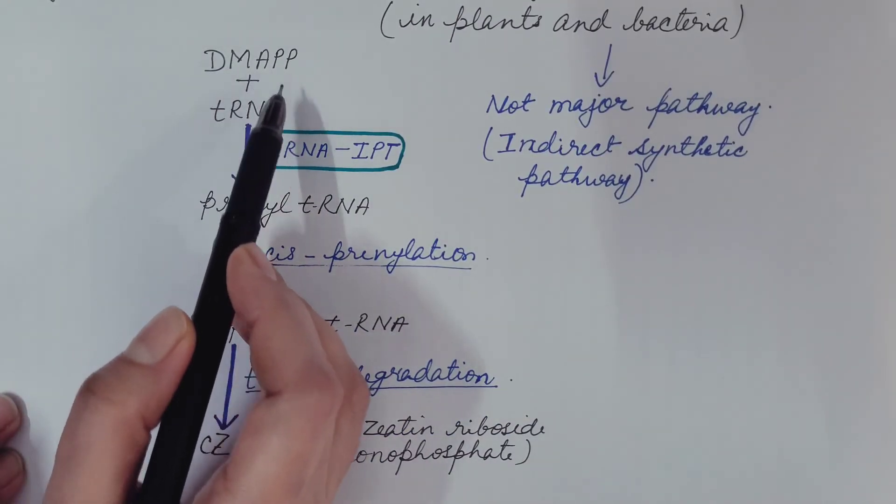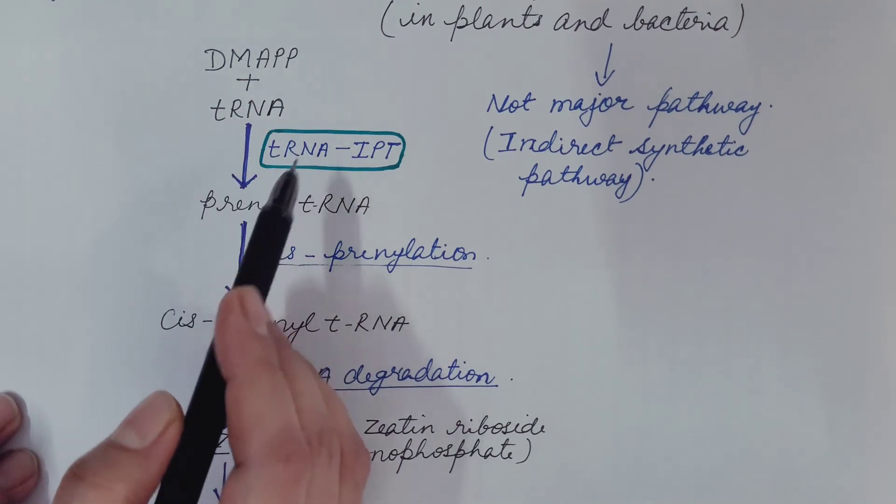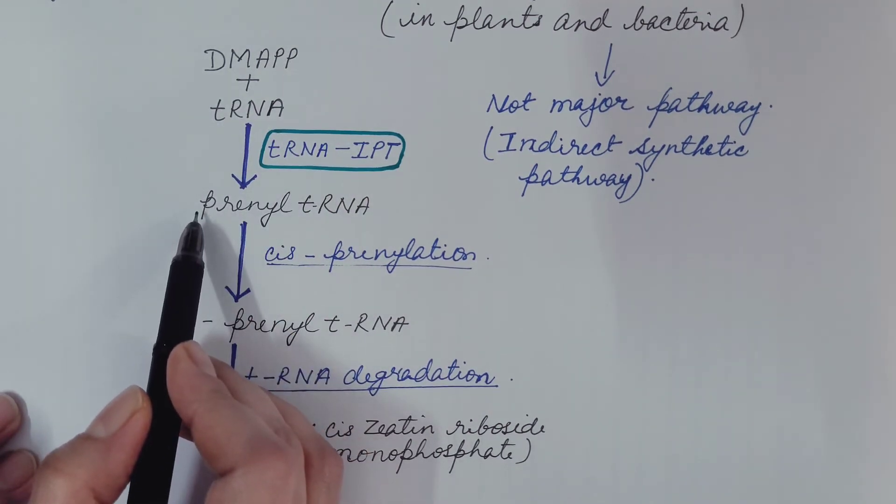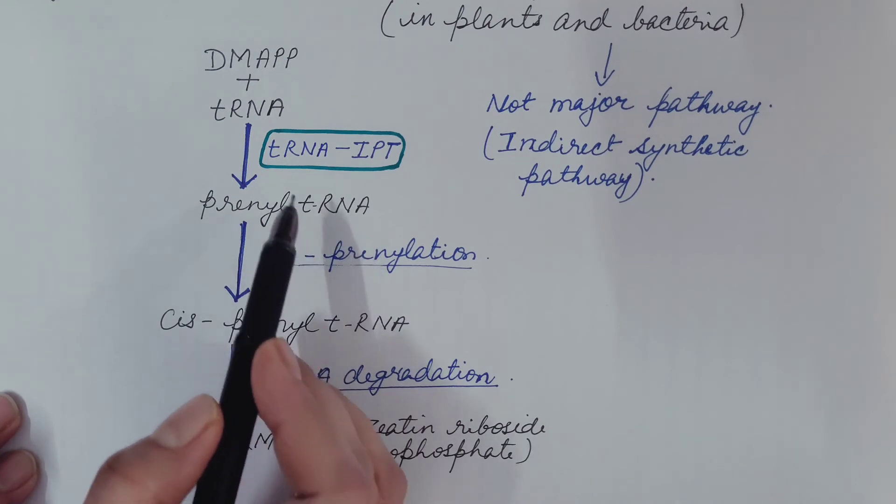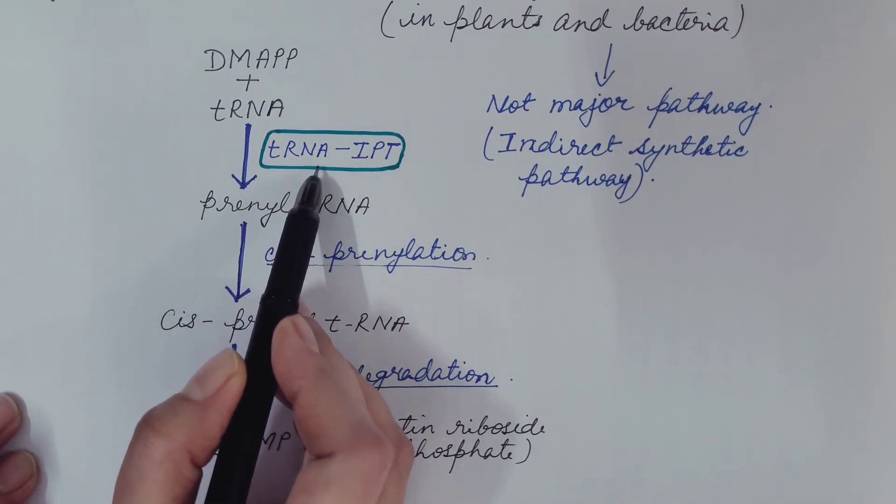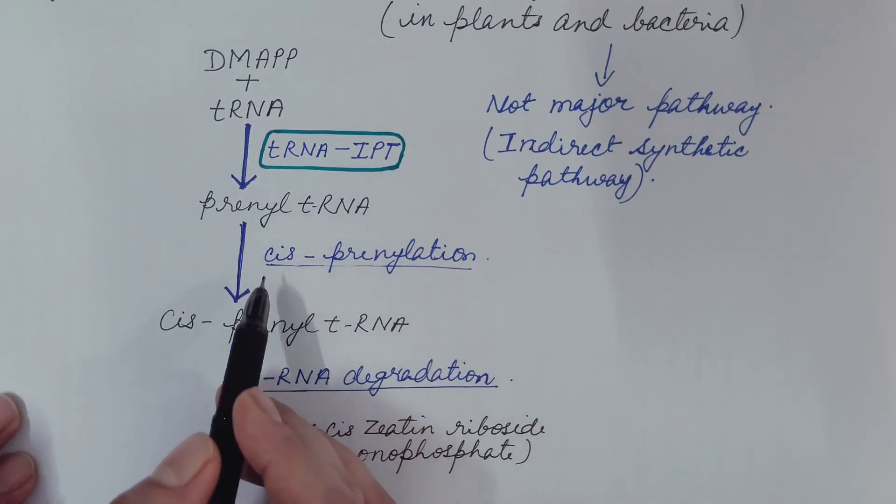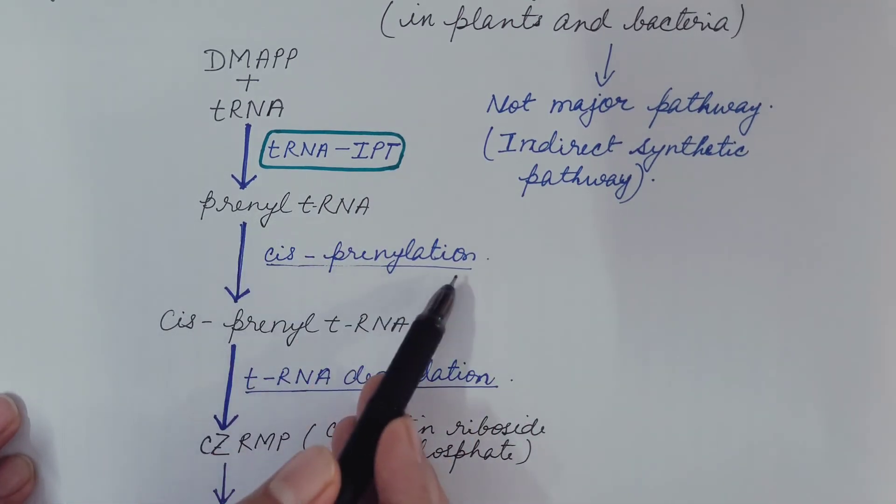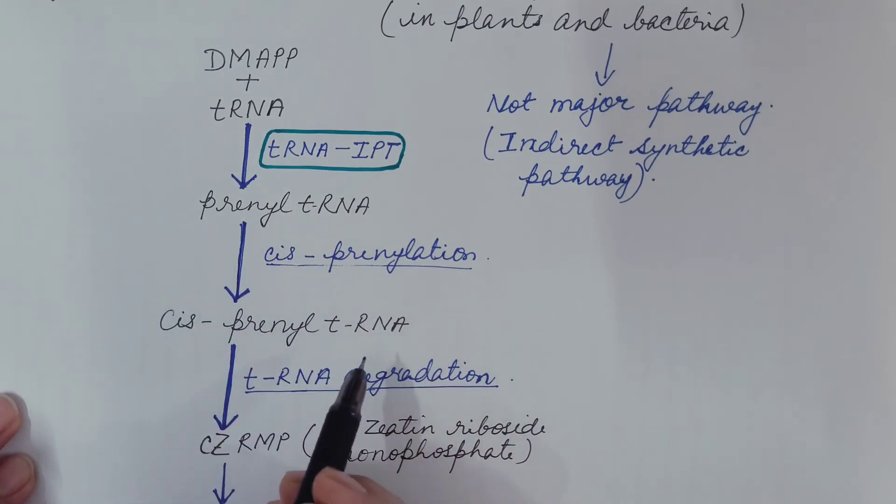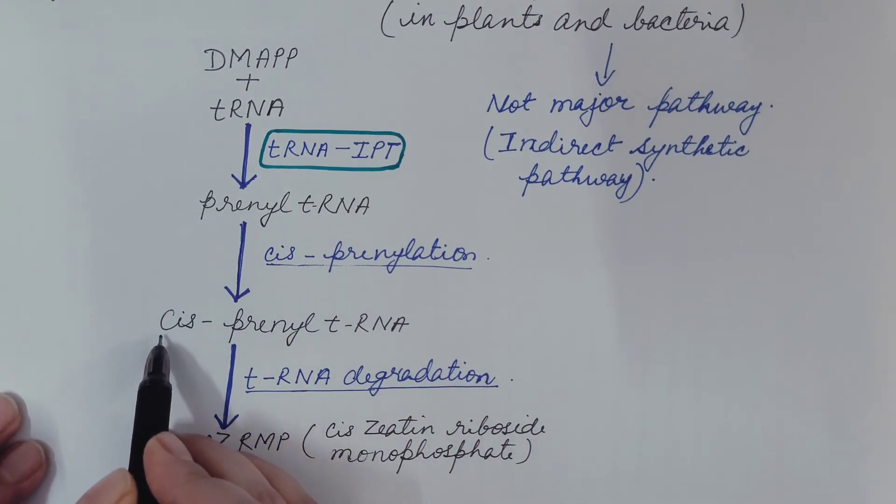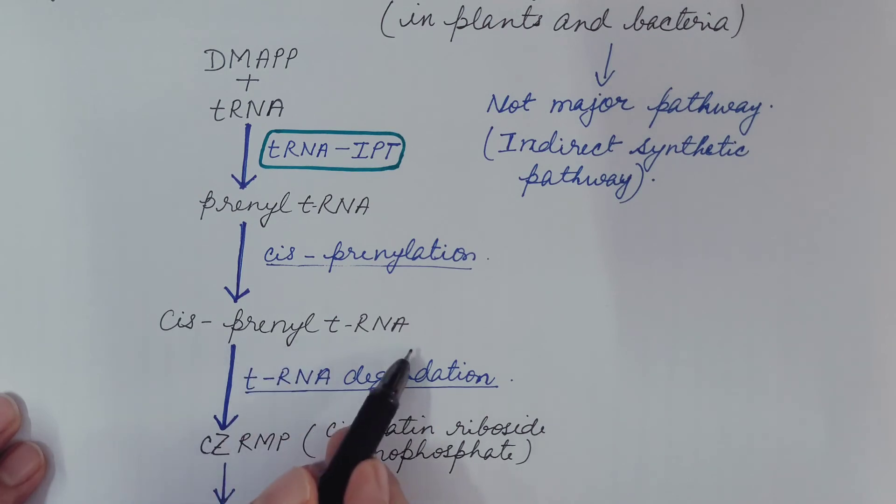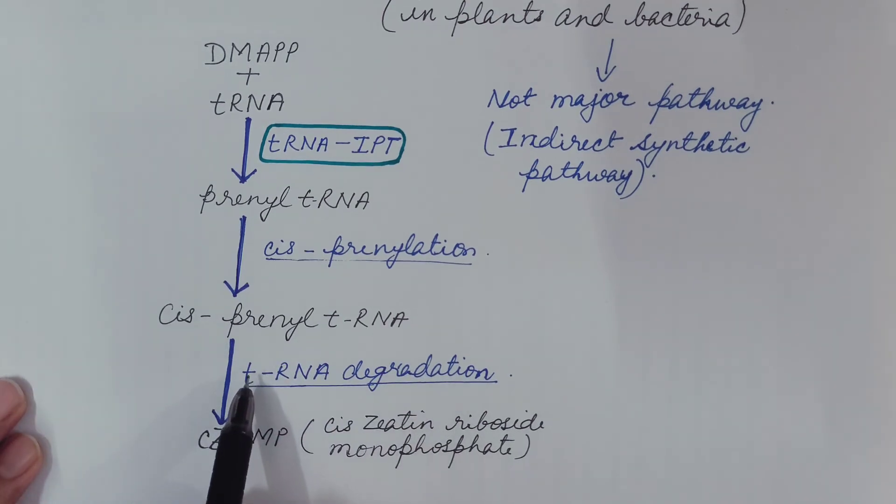Here DMAPP plus transfer RNA gives prenyl transfer RNA. This step is catalyzed by the enzyme transfer RNA isopentyl transferase. Then cis-prenylation of prenyl transfer RNA takes place and it is converted into cis-prenyl transfer RNA. In the next step, transfer RNA degradation takes place and we get cis-zeatin riboside monophosphate.